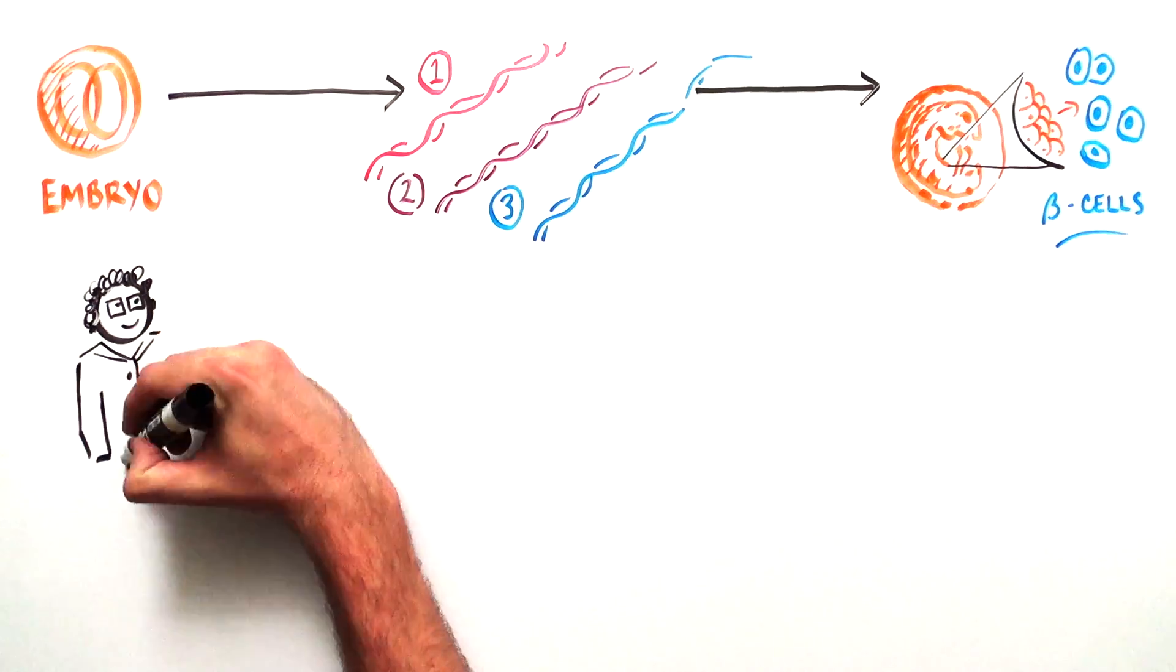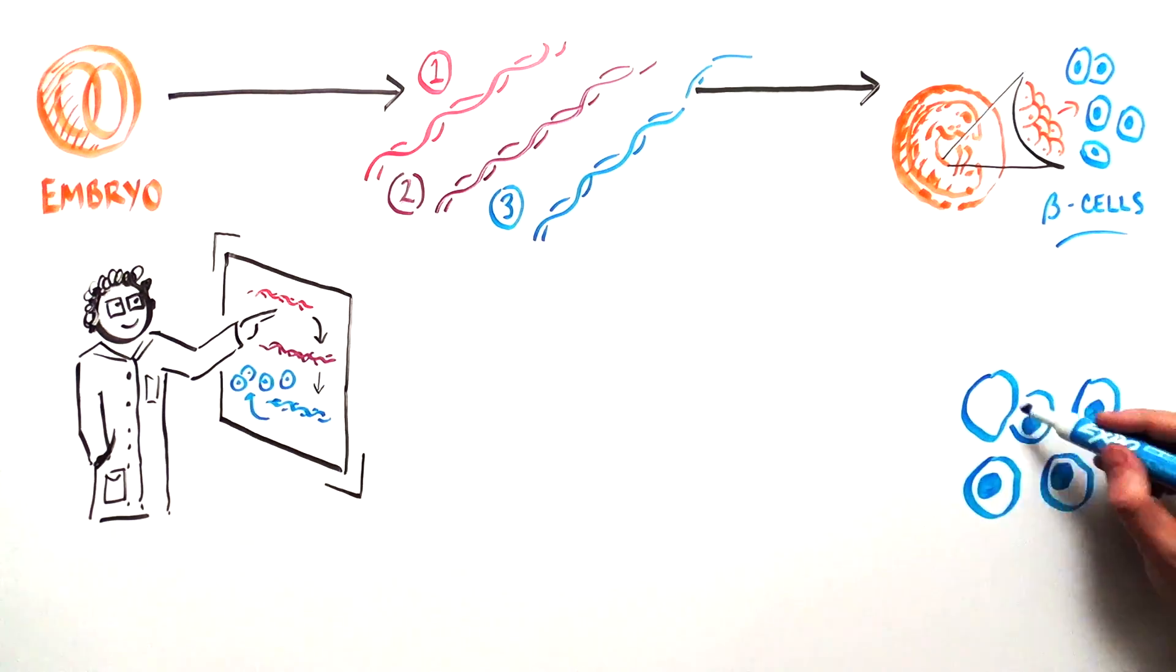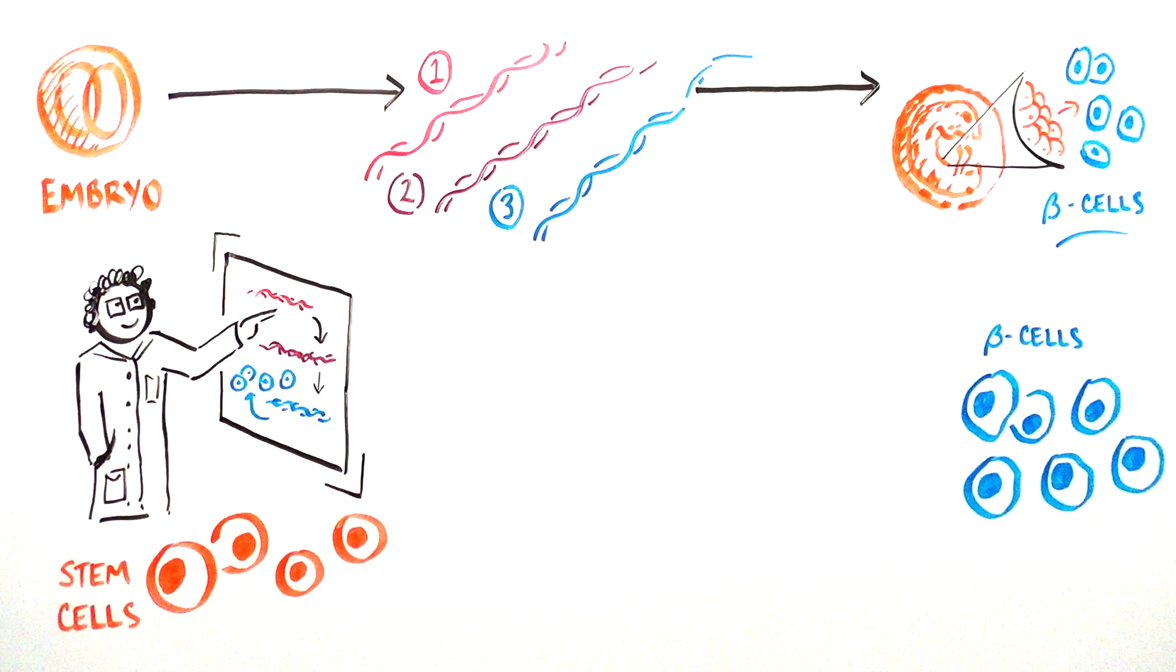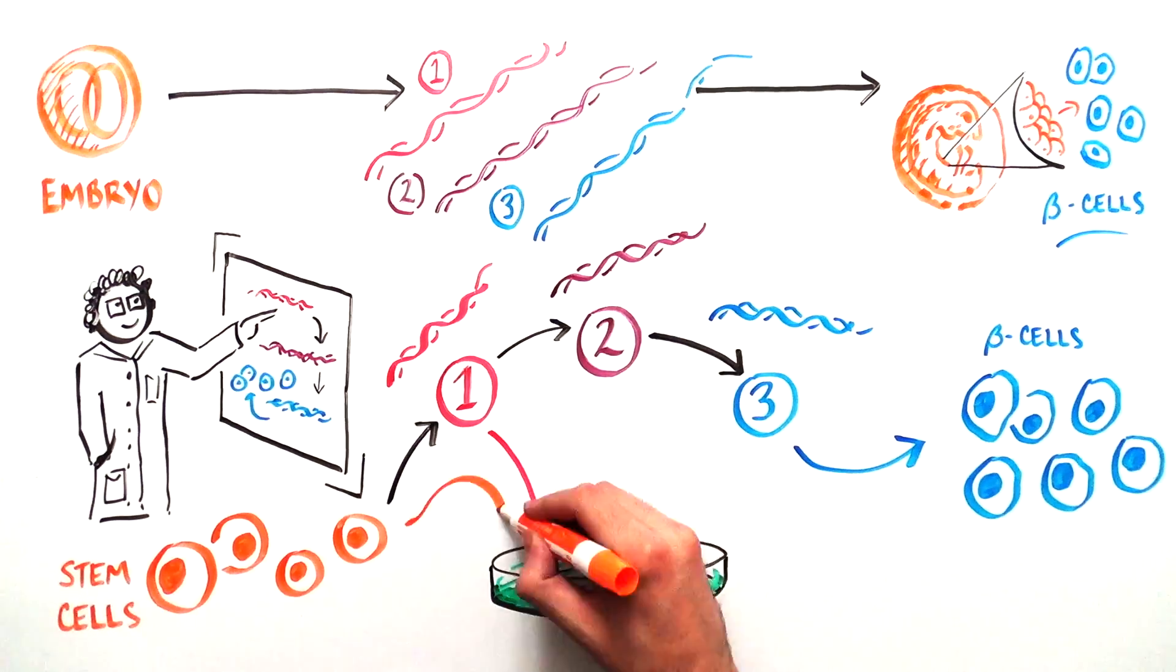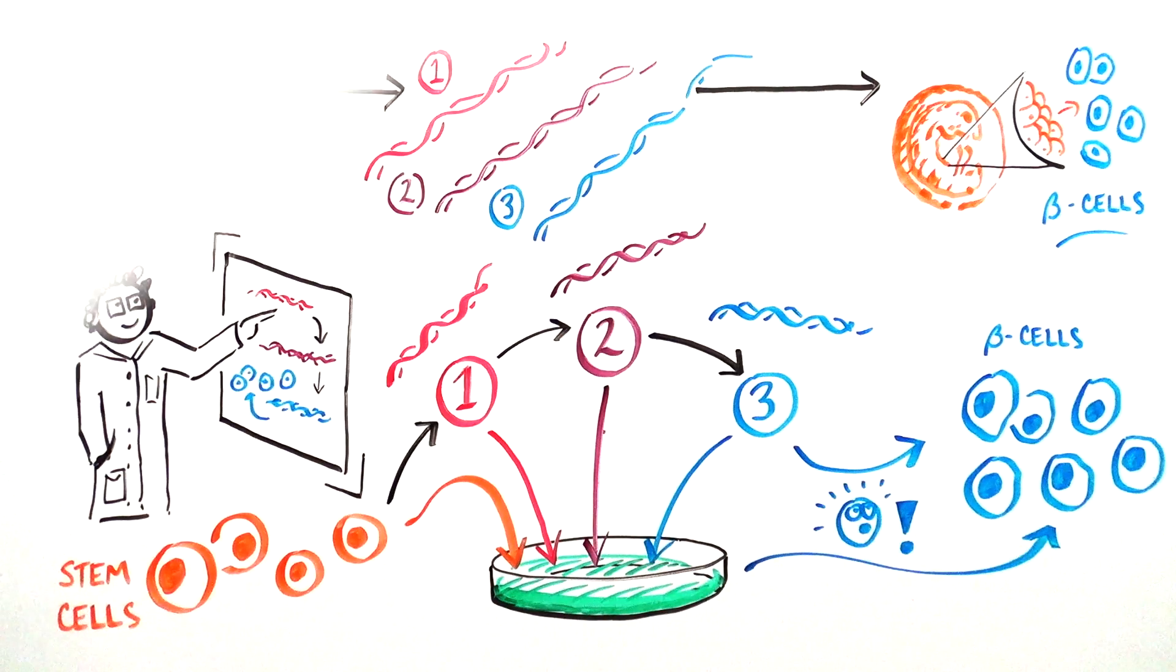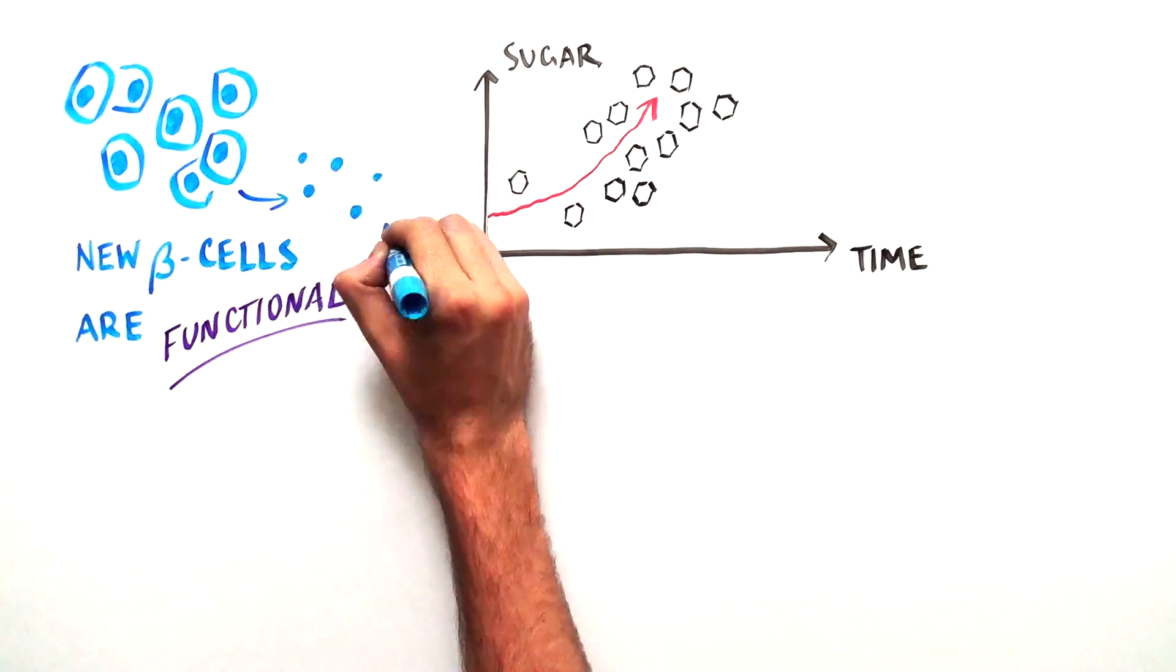Scientists have been able to map out these genes and have been using this information to create their own beta cells from stem cells. By replicating exactly what happens in normal development of the embryo, scientists are creating beta cells in a petri dish. And these new beta cells are functional. They can produce insulin in response to blood sugar levels.